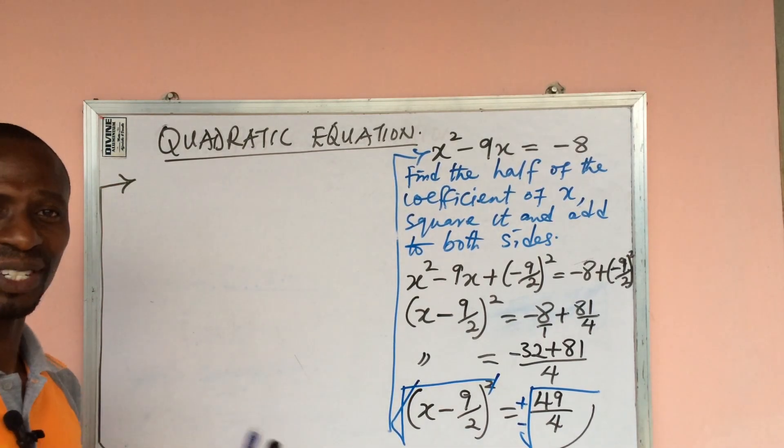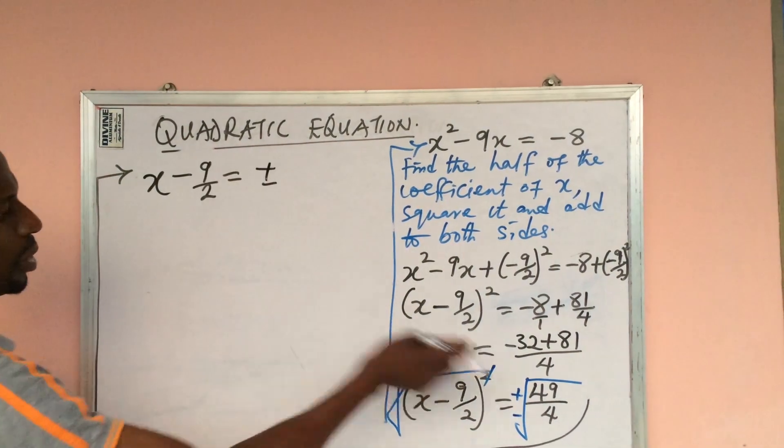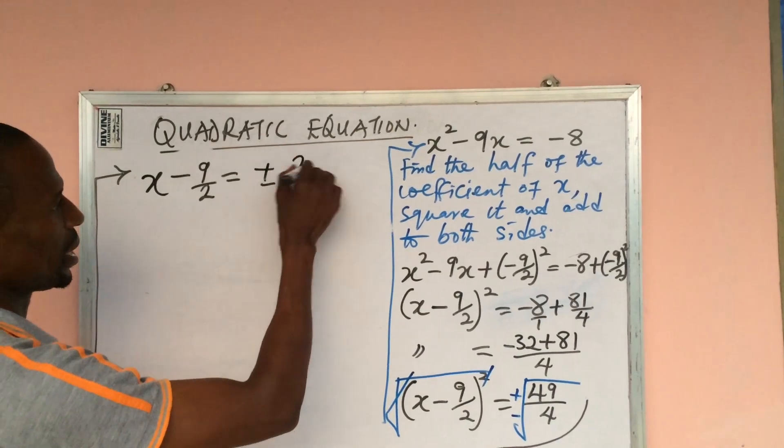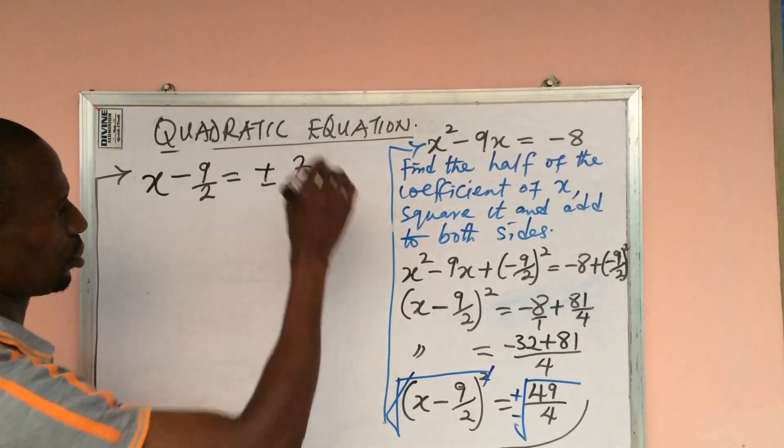From here, x - 9/2 = ±7/2. The square root of 49 is 7 and the square root of 4 is 2.